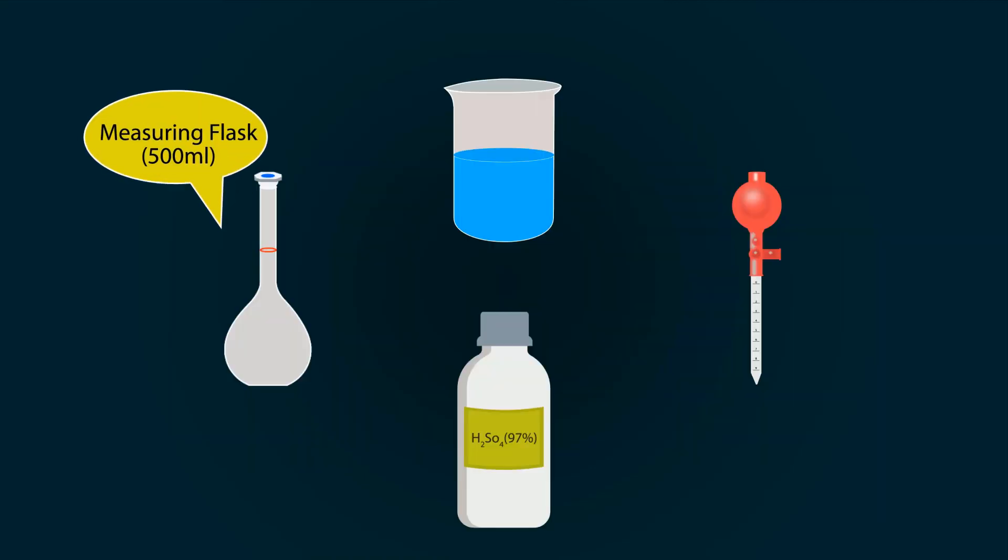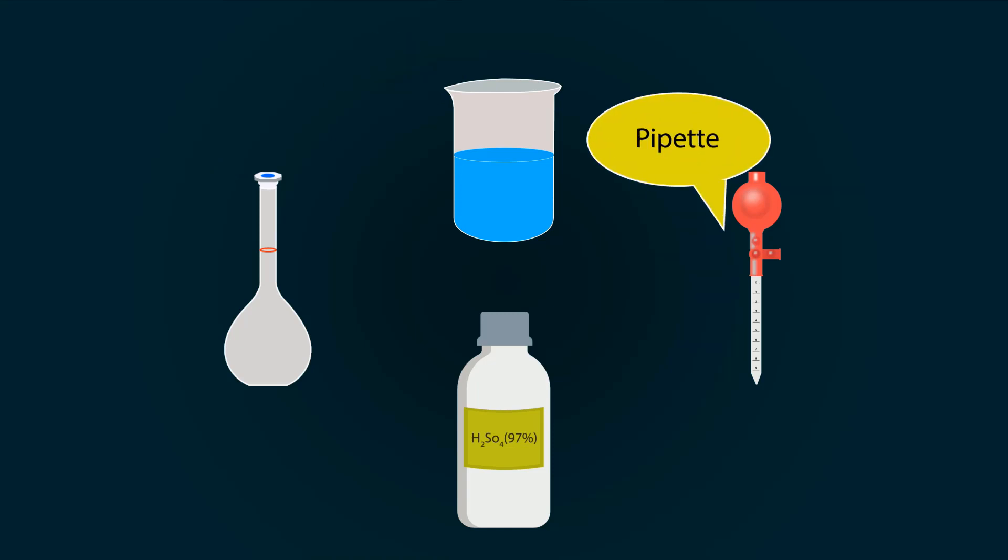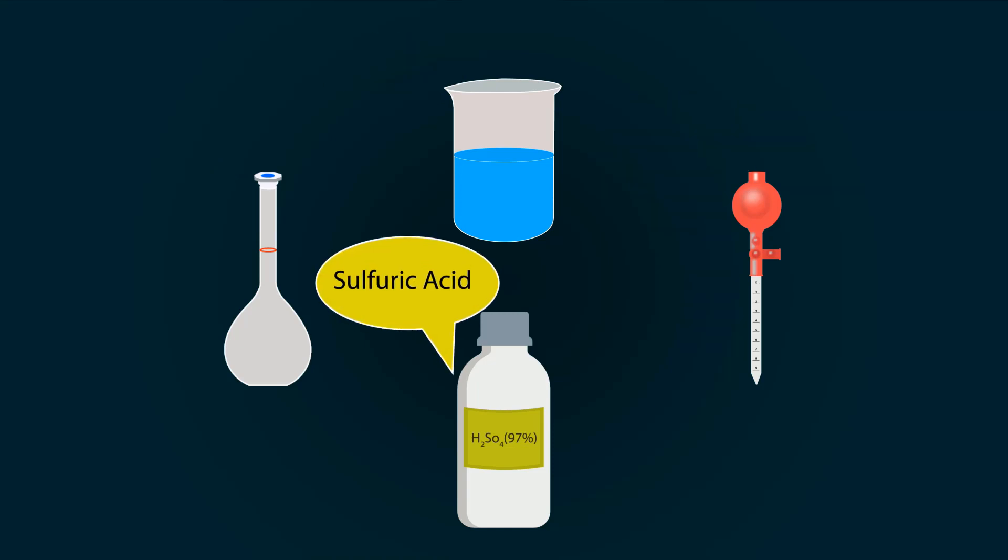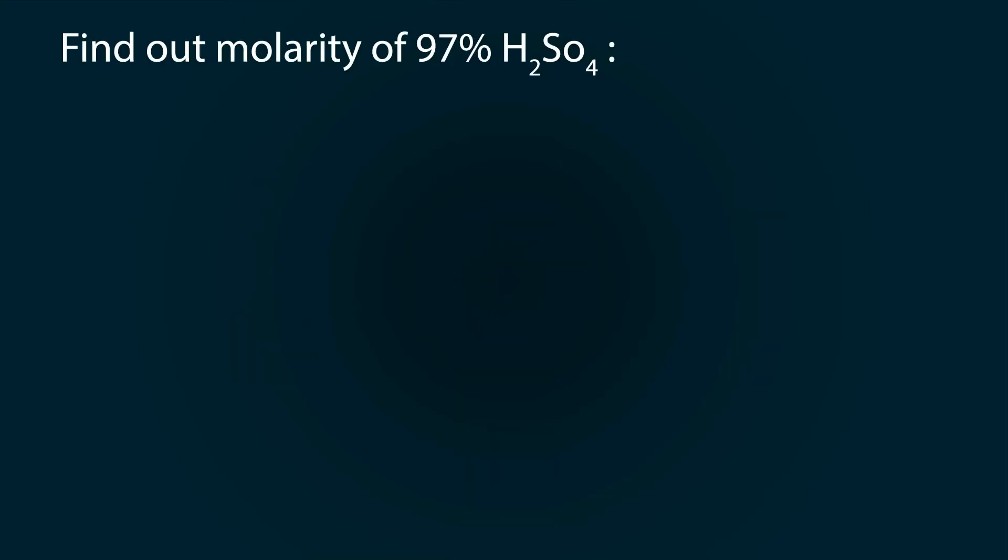The required apparatus and chemicals are: measuring flask of 500 milliliters, distilled water, a beaker, pipette, and a bottle of H2SO4. Now let's find out the molarity of 97% H2SO4.